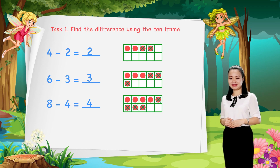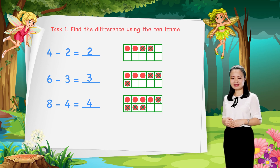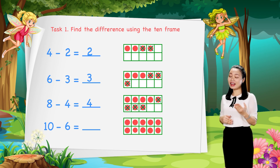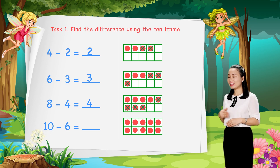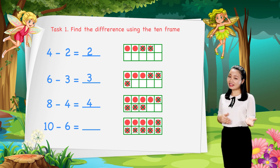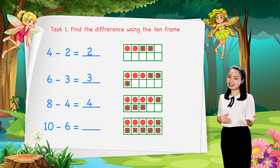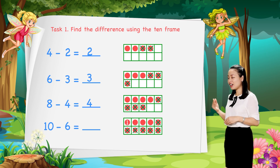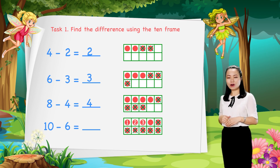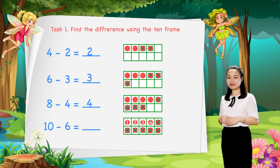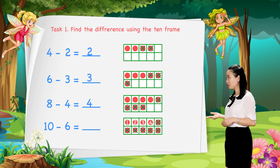The last one: find 10 minus 6. We draw 10 dots in the 10 frame. Then, cross out 6 dots. Then, count the number of dots left to find the difference. Let's count: 1, 2, 3, 4. So, 4 dots left. Therefore, 10 minus 6 equals 4.